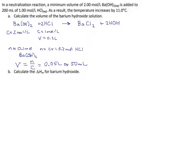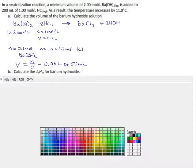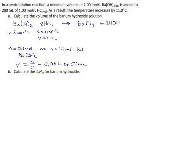We haven't done any thermochemistry yet — that's coming in section B, which we're getting into right now. Calculate the delta H, they say, for barium hydroxide — its molar enthalpy of reaction. We're going to do this, but it's not where we're starting. We're starting on the other end where we know more information. We know that our solution's temperature increased by 11 degrees — they gave us that.